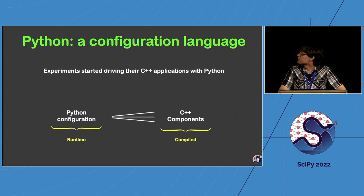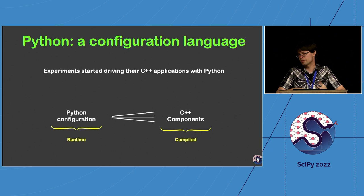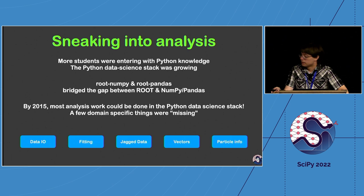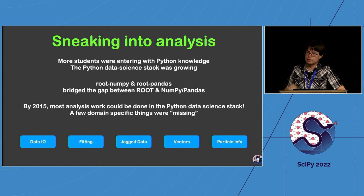Python was actually sneaking into high energy physics through experiment frameworks. These large C++ applications had millions of lines of code but needed tremendous configurability, and Python served as a nice glue language into C++. Python was also showing up for smaller scripting needs. In analysis, students were coming in already familiar with NumPy and other tools and really wanted to stay in that environment — but ROOT was its own completely separate environment. You couldn't just pip install ROOT; you had to spend several hours building it tied to a specific Python.